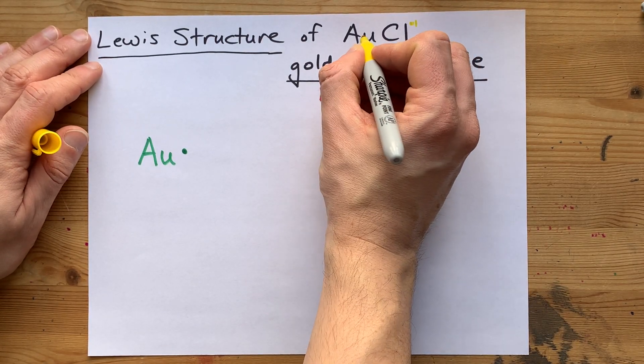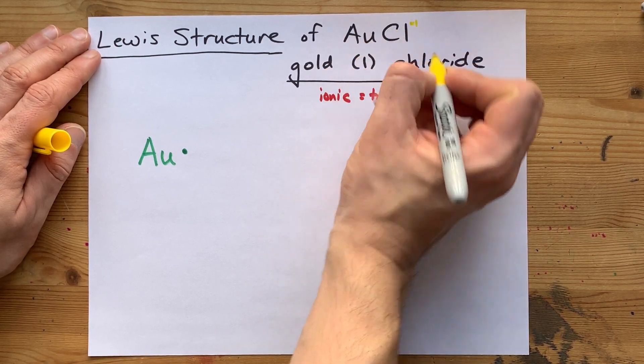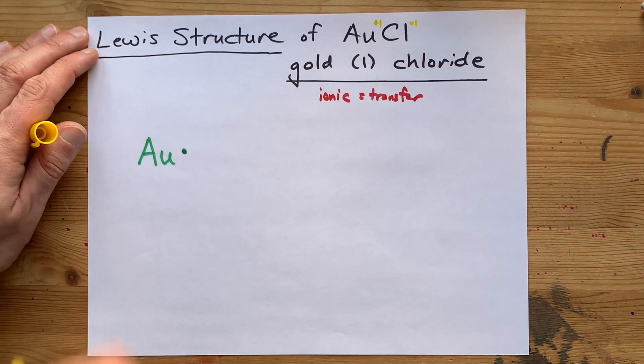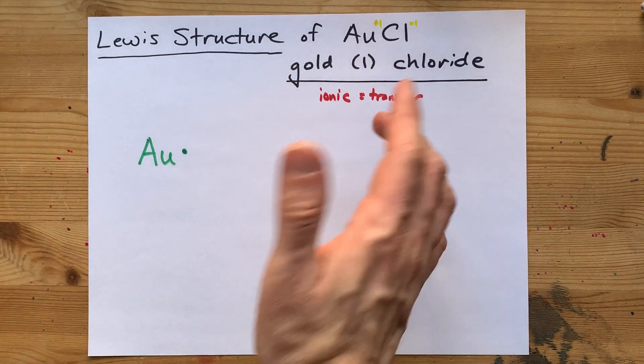then in order for it to cancel out in terms of the subscripts here, one gold with one chlorine, that gold would have had to have been a plus one charge. So, you can get that one from the formula or the name.